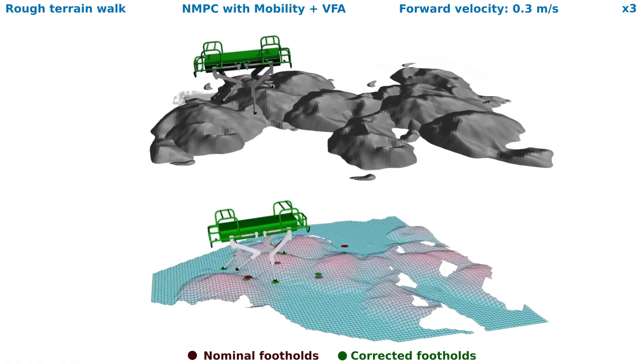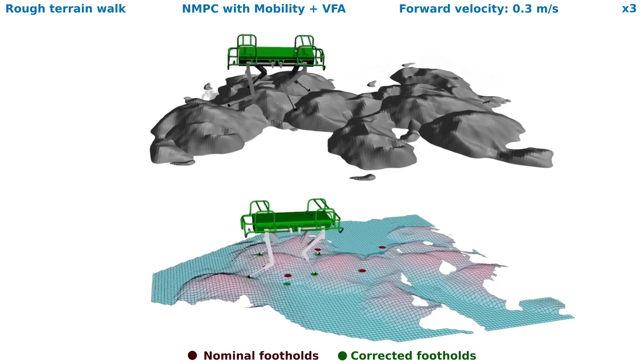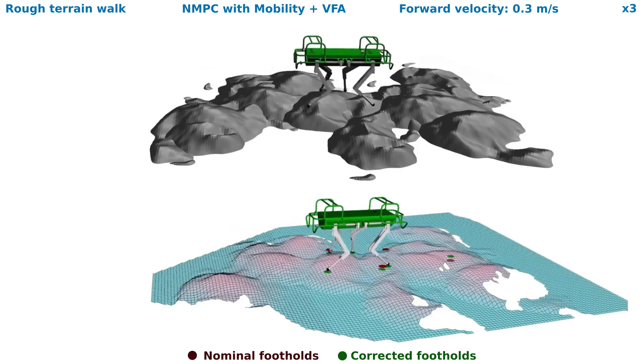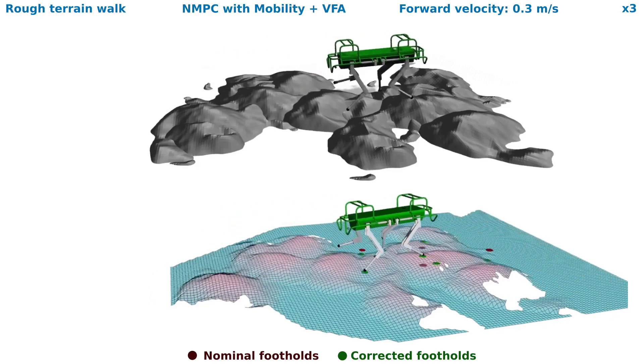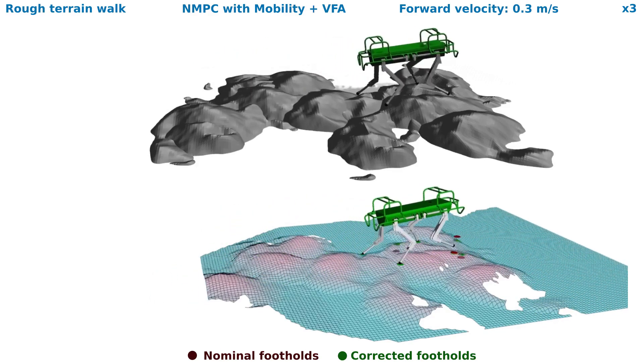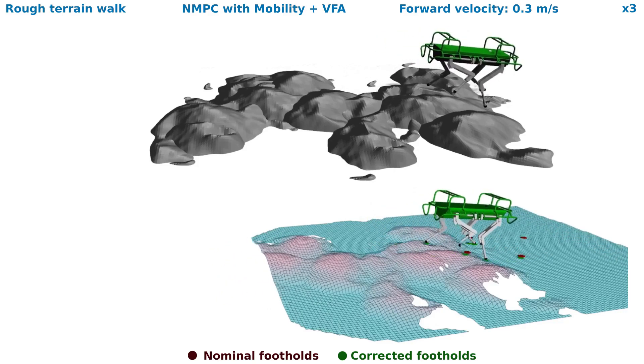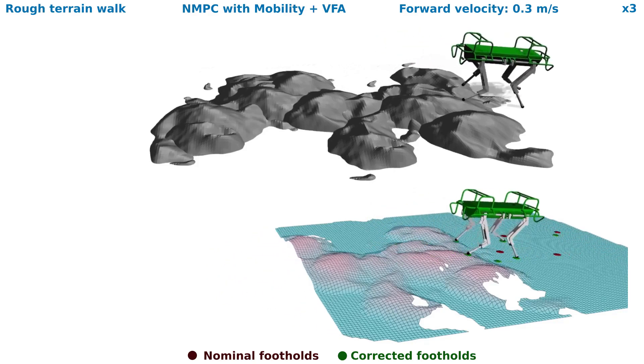In this simulation, we show the efficacy of the terrain-aware NMPC where the robot traverses over rough terrain with a forward speed of 0.3 m per second.